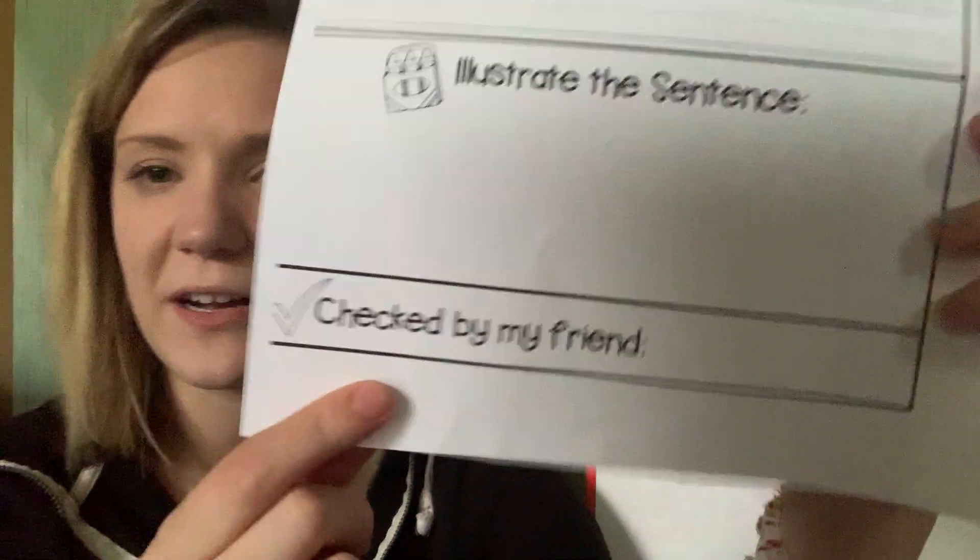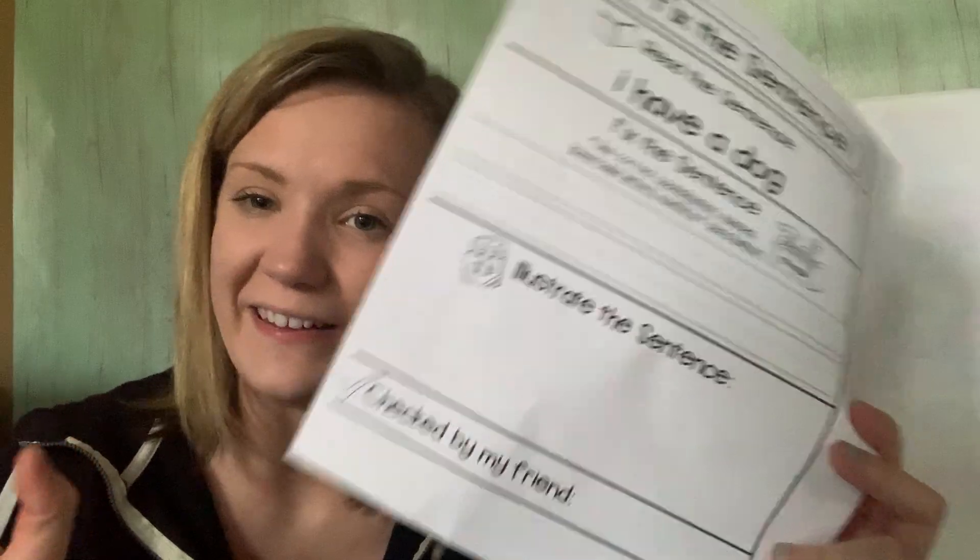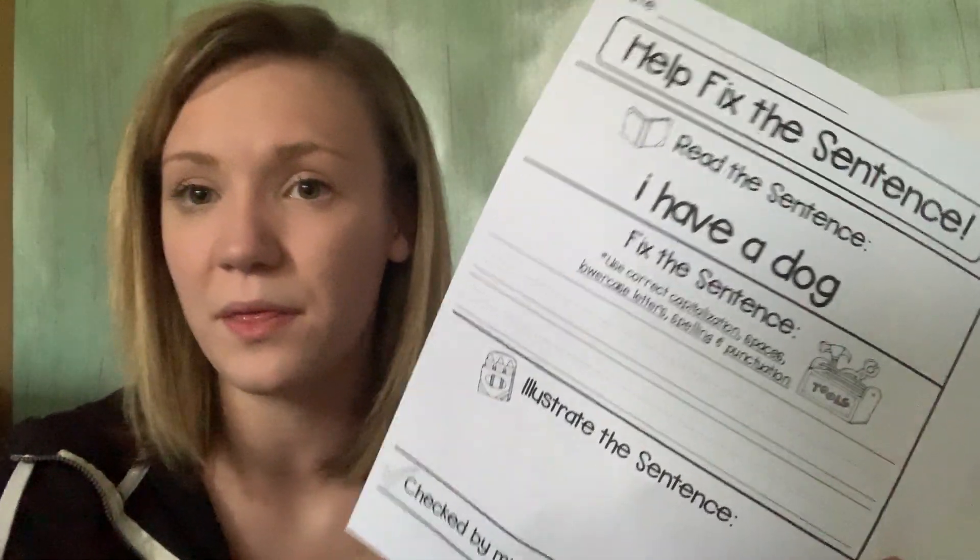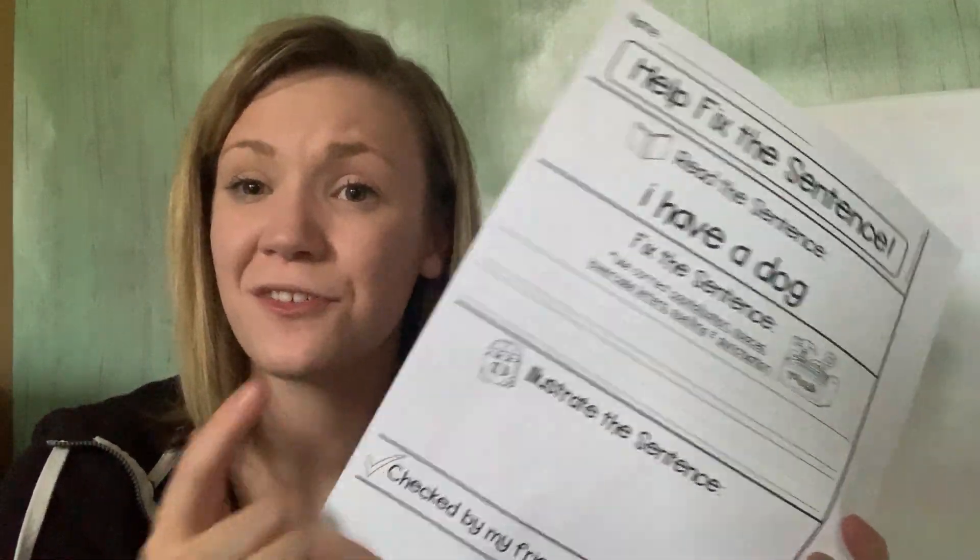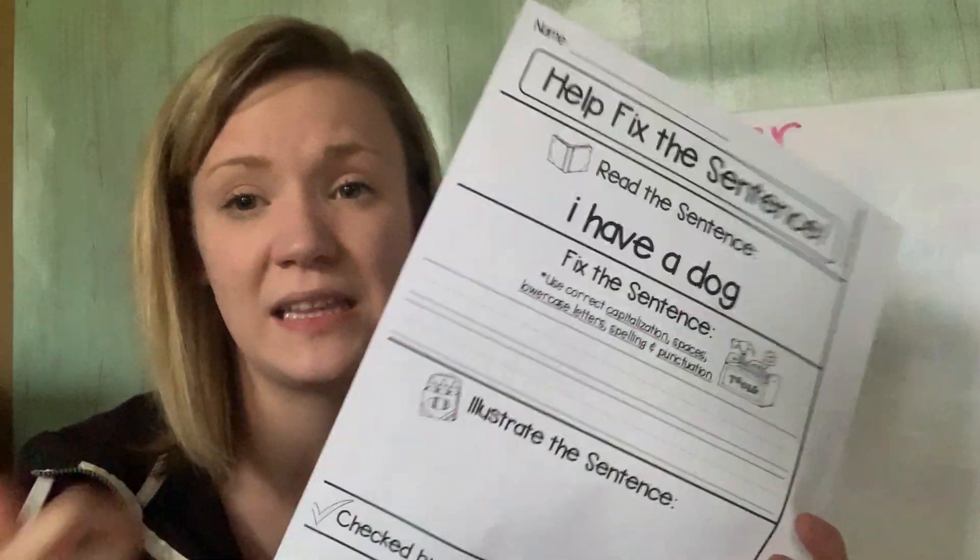and I hear it down here. Sorry. It says checked by a friend. So you can pick a friend in your household that can be brother, sister, mom, dad, aunt, uncle, grandma, grandpa, whoever is in your house today. Have them check your sentence, make sure that it has all the right parts of a sentence and make sure that they check your drawing. Make sure that it has lots of detail and lots of color. Okay.